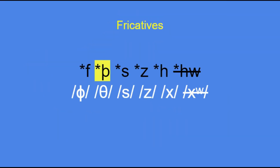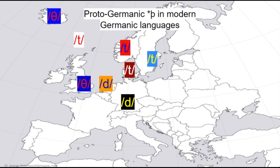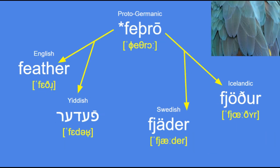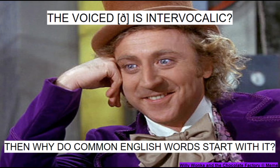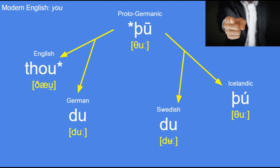Everything I just said also applies to th. It got voiced to ð in the same situations in West Germanic languages and then phonemicized in English. However, only English and Icelandic still have either sound. In the rest of the Germanic languages it either became d or t, depending on whether it was voiced or voiceless before the fortition. In Swedish it became t word-initially, while in German and Dutch it became d. For example, Proto-Germanic *thankjaną became Icelandic þekkja, Swedish tänka, Dutch denken, and English think. There is also the special case of closed-class function words starting with voiced ð — like 'the' — which historically applied to other Germanic languages too, as seen in the Swedish word for 'you,' du, where we'd otherwise expect tu.